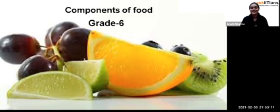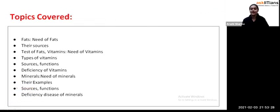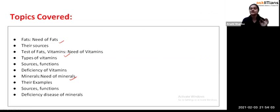We are going to continue with this chapter and look at different components present in our food. Today we will study fats — what they are, their sources, and how to test for them. Then we will look at vitamins and minerals — how they function and what diseases their deficiency can cause. We have already discussed carbohydrates and proteins, and now we cover fats, vitamins, and minerals.